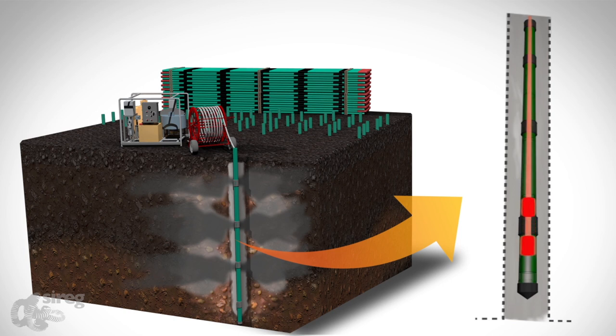Therefore, different mixtures can be injected at different levels. When grouting in the presence of fractured rocks, polypropylene bags can be placed over some of the pipe's sleeves in order to prevent the mixture from rising up along the borehole.